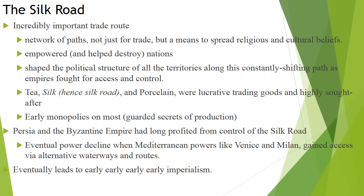For now, the Chinese have monopolies on a lot of the goods being passed along this route — guarded secrets of production. They are actually very secretive about how silk is produced and how it's shipped, so they keep the money and profits as high as they can. The Persians and the Byzantine Empire — the eastern Roman Empire — have long controlled the profit here because of their location along the western border of the Silk Road.